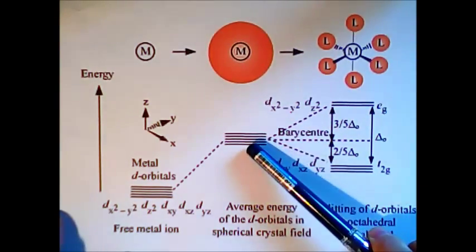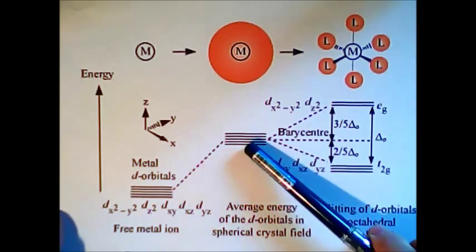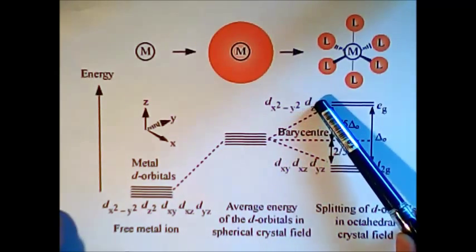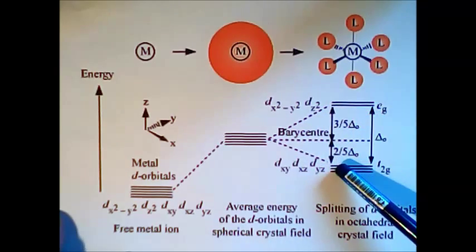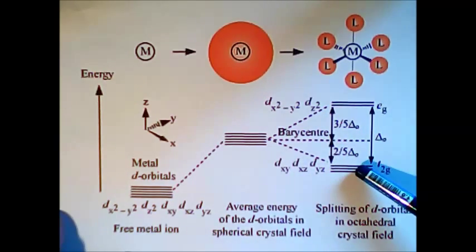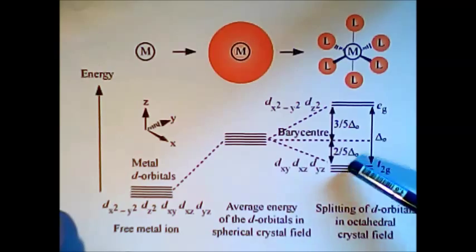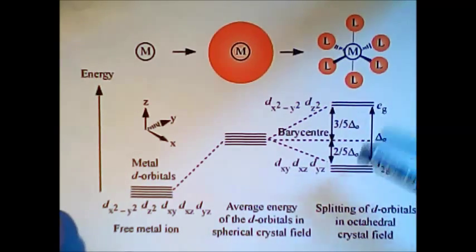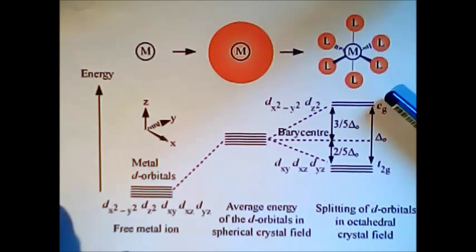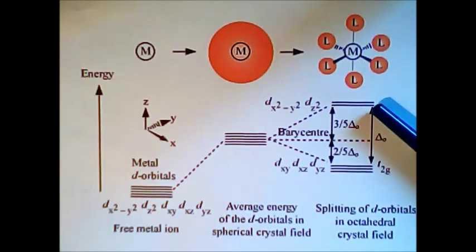The d-orbitals of the metal lose their degeneracy and split up into two parts. And this energy difference is responsible for the absorption of light. Electrons can go from the lower level to the higher level by absorbing visible light, and therefore we get the color of the complex.